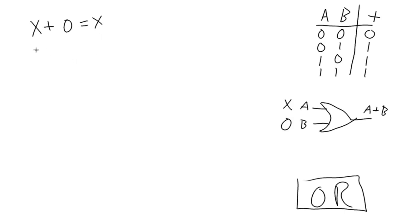The second one that we've got, theorem 2, is X OR'd with 1 equals 1. Oops, sorry, I meant to remove this here. There we go. So we've got X OR'd with 1 equals 1.